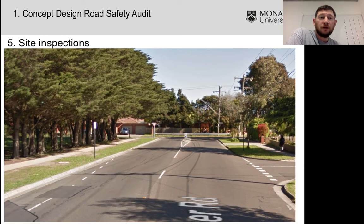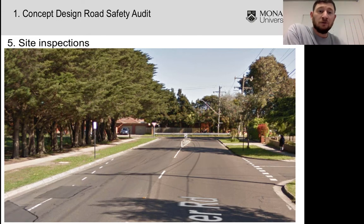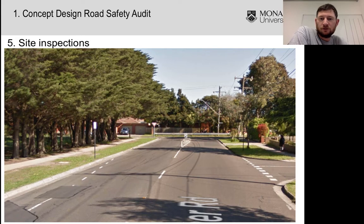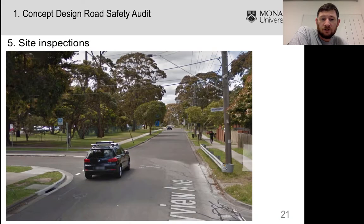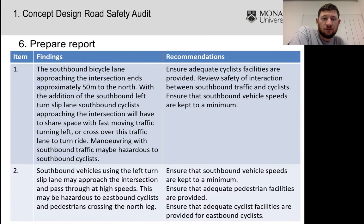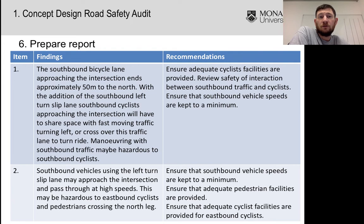Then I'd go out and have a look at the site. The site has now changed, so these are some earlier Google Street View photos — this is what it looked like originally from the north looking south towards the intersection. This is looking east towards the intersection. Having looked at it during both the day and the night, I would then prepare a road safety audit report.